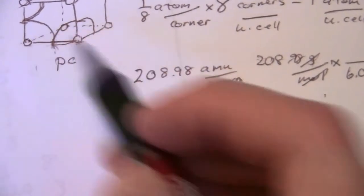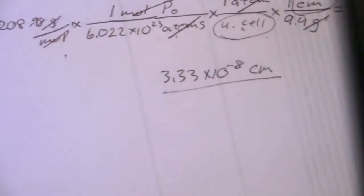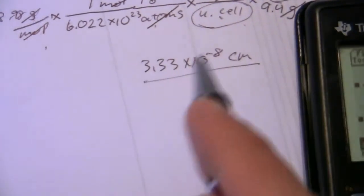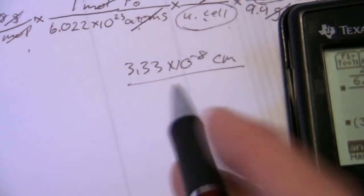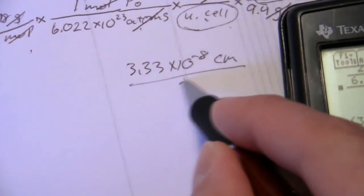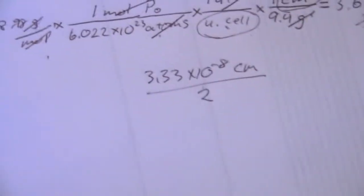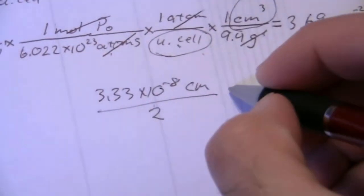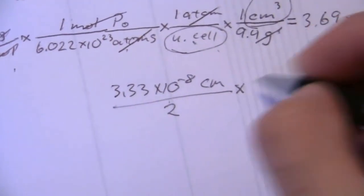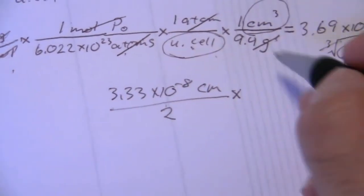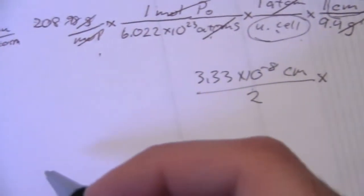So if that's the diameter, then how do I get the radius? I divide by 2. Now I'm going to put this in units that are more typical for atomic radii, which is picometers. And to find the conversion factor there,